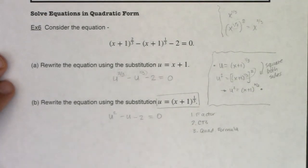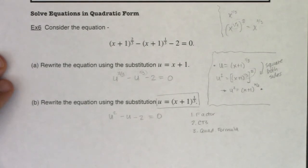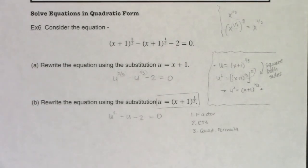The u substitution that worked here was x plus one to the one-third — this got us to nice integer exponents and a proper quadratic equation. Let's try another one in example seven, and then we're going to talk about the pattern we're seeing.